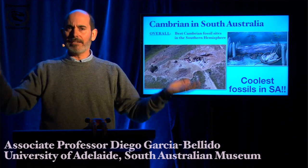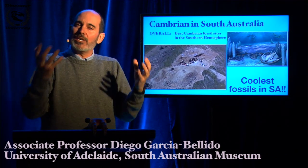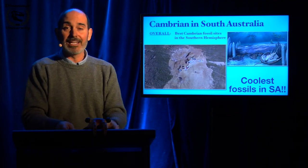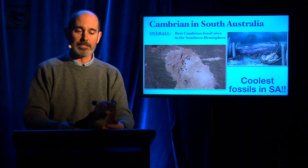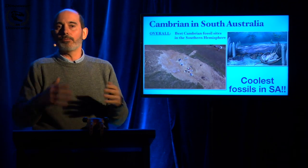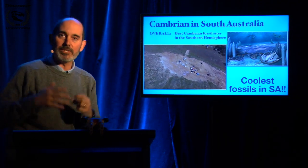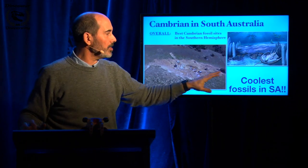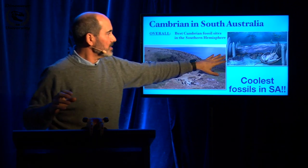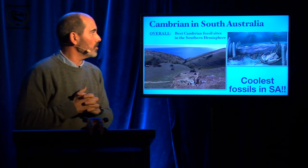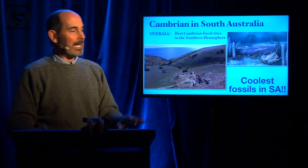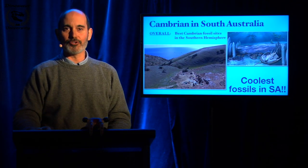We've got the complete assemblage — the whole community of animals living there — not just the ones with shells like the trilobites, but also the ones with soft parts, like Anomalocaris, that didn't have any mineralized parts. Not only that — we find their eyes, their gills, their guts with the last meal. Not like the bones we see later in the fossil record. Here, we've got the complete community: trilobites with spines swimming and crawling on the sea floor, sponges, and animals swimming in the water column — those large predators like Anomalocaris. Undoubtedly, we're in front of the coolest fossils in South Australia.